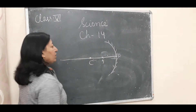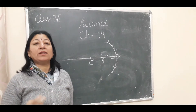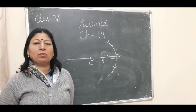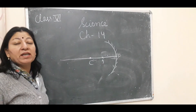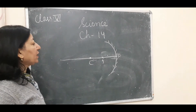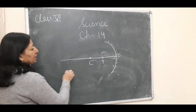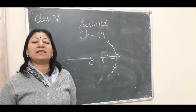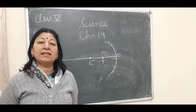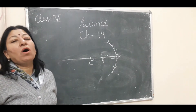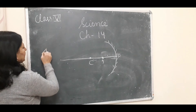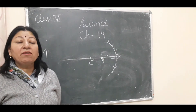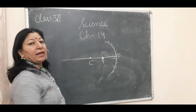Now let us see how images are formed. If an object is placed very far away — at infinity — in front of a concave mirror, the image forms at the focus. The image is very small, like a dot, highly diminished, inverted, and it is a real image.